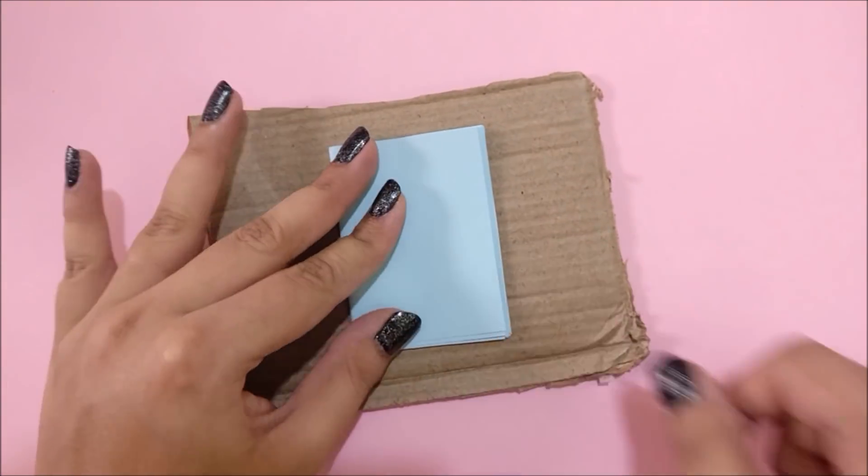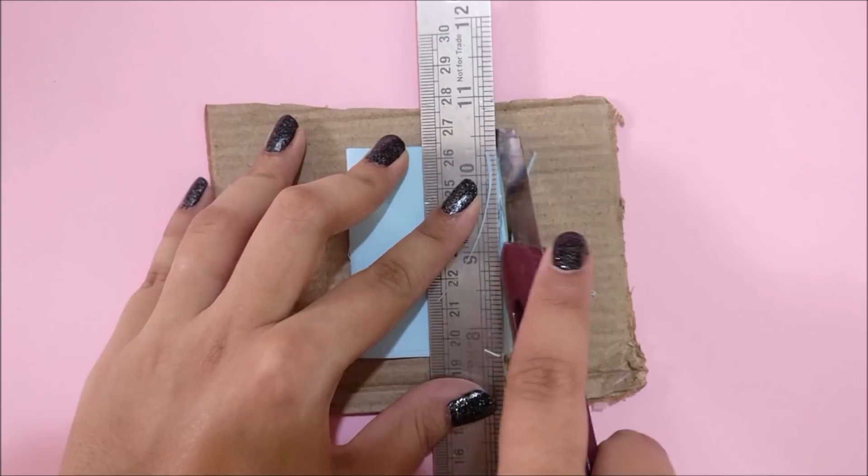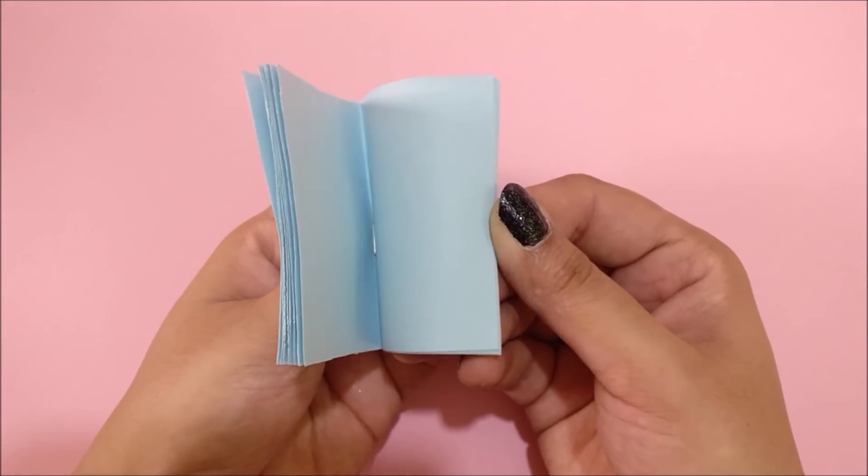Are you still here? So it's time for some bonus tips for you. Tip number one: after stapling, your pages will be slightly uneven. So with the help of a ruler and a knife, I am trimming off the excess to make it even on the edges, and it will help it to look nicer.